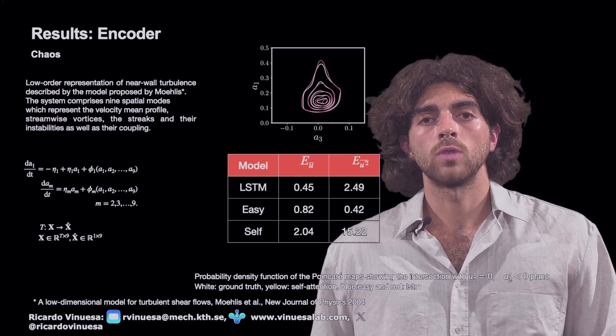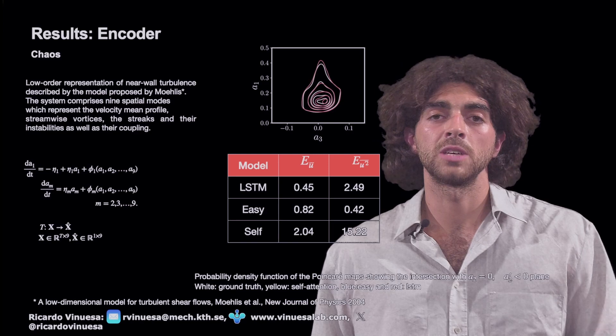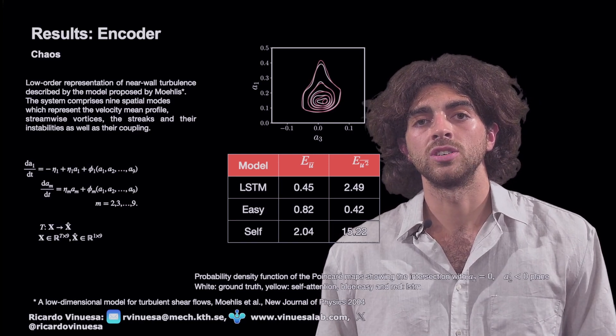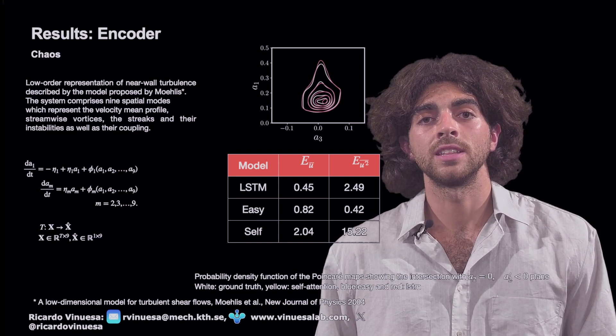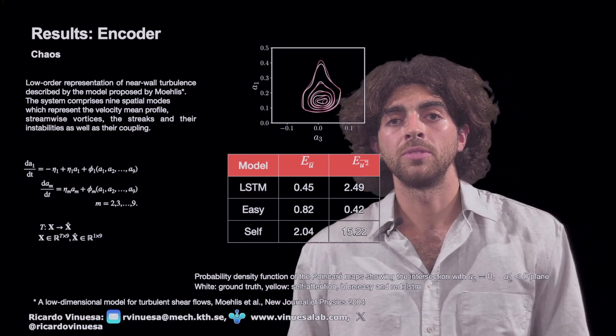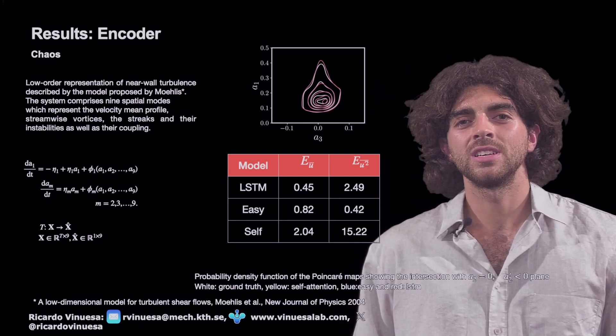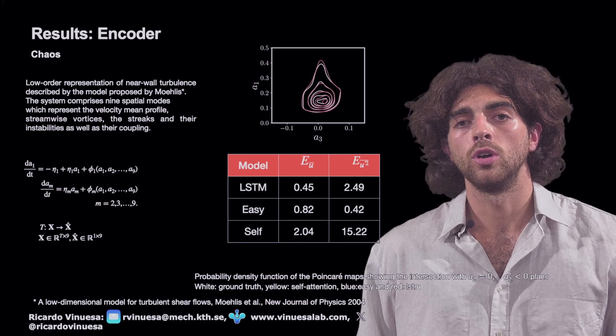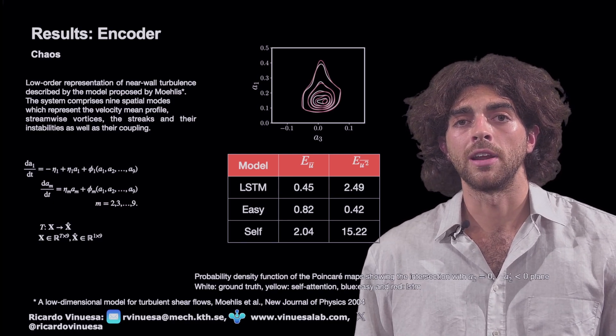Furthermore, if we want to take into account the metrics that we mentioned, such as the Reynolds stresses, in this case mean profiles and fluctuations, the LSTM outperforms the East Attention for the mean profile. However, for the fluctuations, the East Attention obtains a really good performance. The self-attention has a promising performance in the mean profiles. However, the fluctuations seem to diverge considerably compared to the other deep learning models.